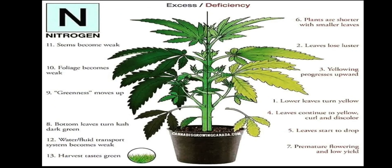If nitrogen is given in excess, the stem becomes weak due to high growth. Foliage becomes weak, and there is insufficient protein for each and every leaf. Excess nitrogen causes full lush greenness in the plant.